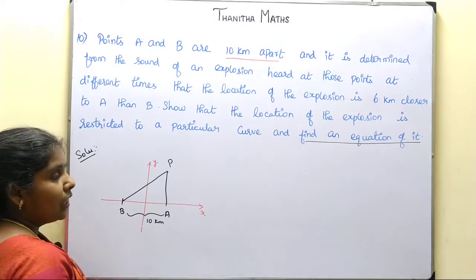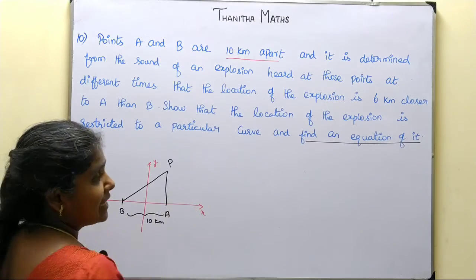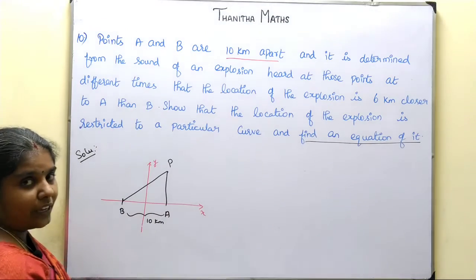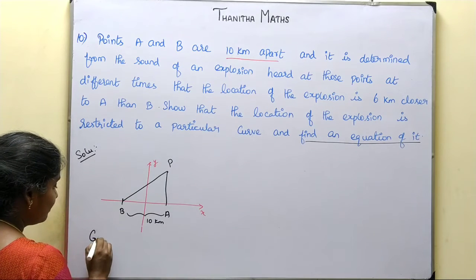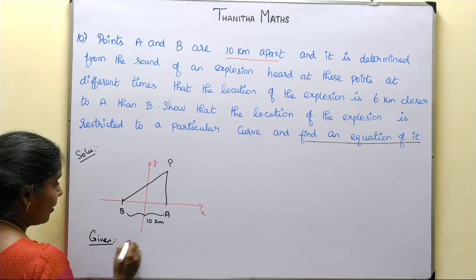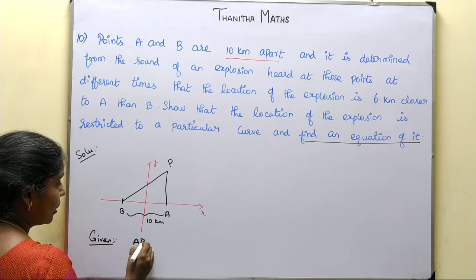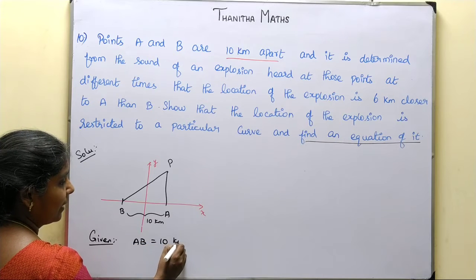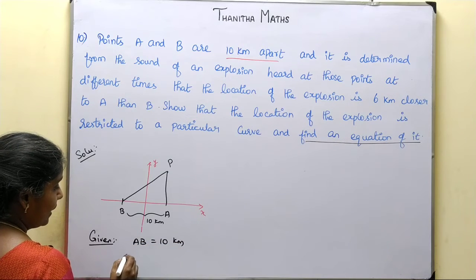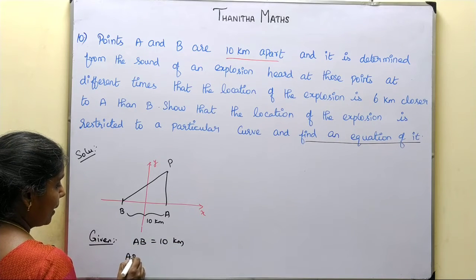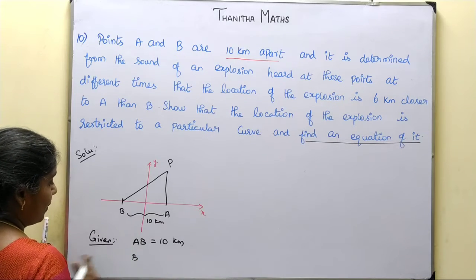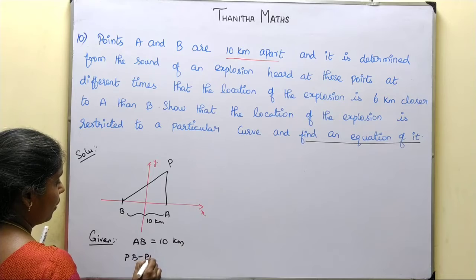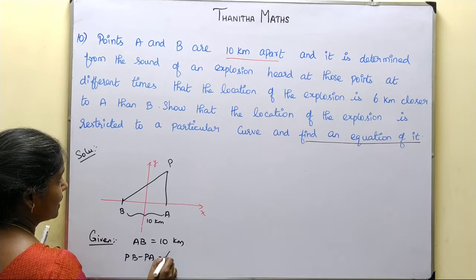We know this is a hyperbola. Given that A and B are 10 km apart, that distance equals 2c. So 2c equals 10, which means c equals 5. And PB minus PA equals 6 km, which gives us our hyperbola parameters.